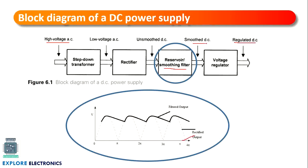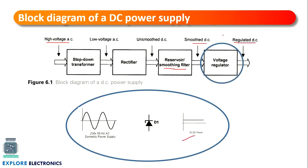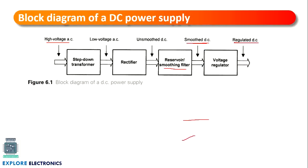That smoothed DC is given to the voltage regulator. The voltage regulator has an active component like a transistor and a Zener diode arrangement. We get a steady regulated DC output. In regulated DC output, even if there is a small variation at the input of the voltage regulator, it will regulate the DC output and we get a constant output from the voltage regulator. That is the block diagram of the DC power supply.